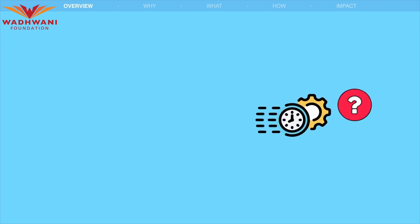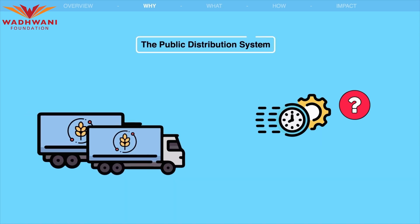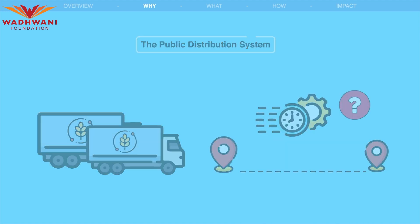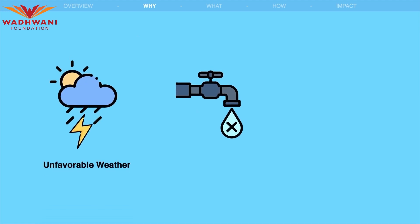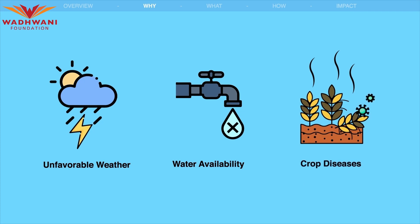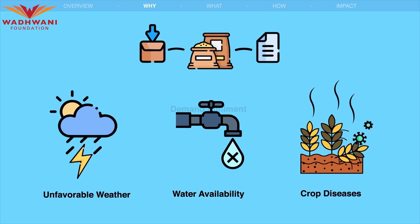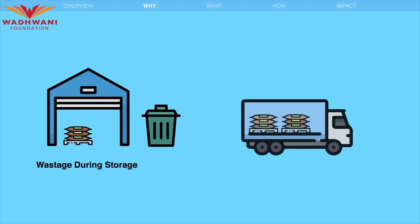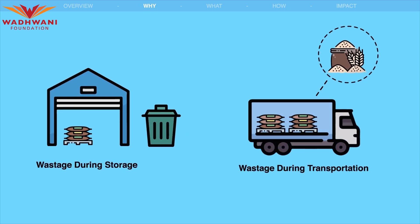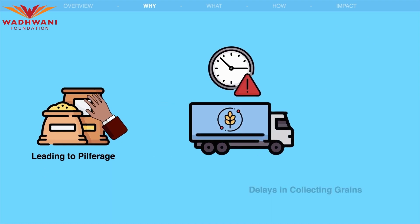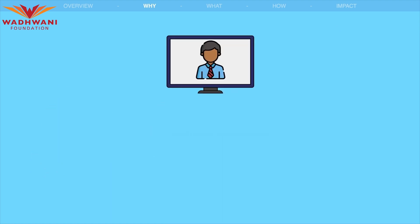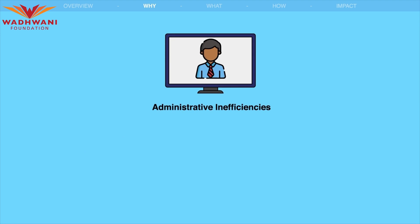The challenges faced by the PDS include the unpredictable supply of food grains due to factors such as unfavorable weather, water availability, and crop diseases, resulting in inadequate demand fulfillment. Additionally, wastage occurs during storage and transportation, leading to pilferage and delays in collecting grains from warehouses.